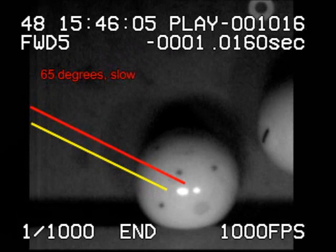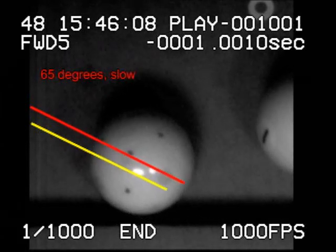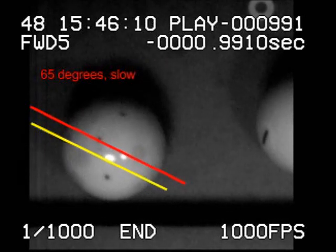In the top view, you can see that the slow speed shot does not compress the cushion or slide down the rail as much as with the fast speed shot.